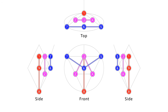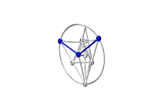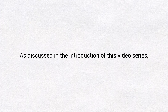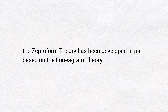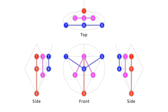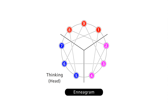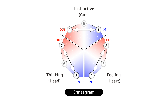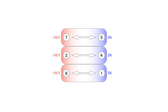This is the three-dimensional structure of the zeptoform. As discussed in the introduction of this video series, the zeptoform theory has been developed, in part, based on the enneagram theory. The nine points of the enneagram correspond to the nine points of the zeptoform. Enneatypes can be divided into thinking, feeling, and instinct — these are called the three centers. Each center has three types, and two of them have opposite tendencies, as indicated by the out and the in. The out and the in of the three centers can be illustrated as three layers.